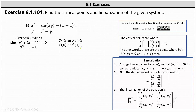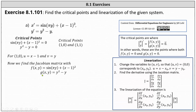Now we can determine the linearization. We first change the variables to u and v, where u is equal to x minus x sub zero, and v is equal to y minus y sub zero, where x sub zero comma y sub zero is a critical point. Beginning with the critical point one comma zero, we have u equals x minus one and v equals y. Next, we determine the Jacobian matrix by determining the partials of f with respect to x and y, and the partials of g with respect to x and y. f of x comma y is equal to sine of pi y plus the square of x minus one, and g of x comma y is equal to y squared minus y.